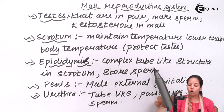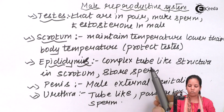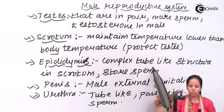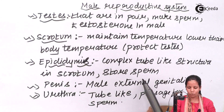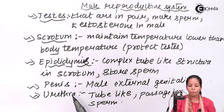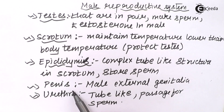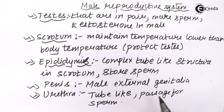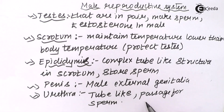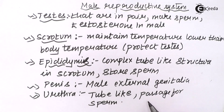The epididymis is a complex tube structure inside which sperm is actually stored. The penis is the male external genital organ. Finally, the urethra is a tube-like structure that forms a passage through which sperms can pass whenever the process of fertilization has been initiated.